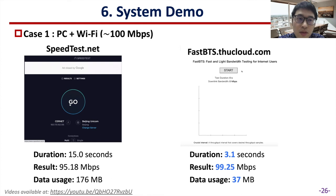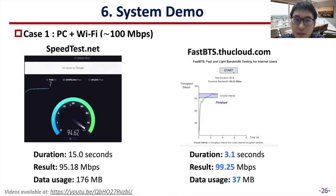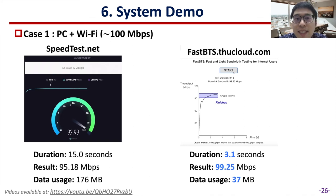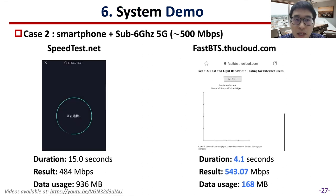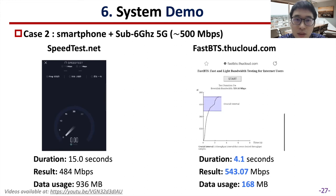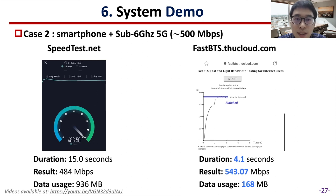Here comes the system demo part. We first conduct bandwidth tests on a personal computer using Speedtest and Fast with a 100 megabytes per second wireless network. FastBTS only uses 3.1 seconds and 37 megabytes of data to obtain an accurate result, while Speedtest uses 15 seconds and 176 megabytes of data for the test. We next conduct a bandwidth test under 5G network. Again, FastBTS outperforms Speedtest by using only 4.1 seconds test duration and 168 megabytes data, while Speedtest uses 15 seconds and about 1 gigabyte data for a single bandwidth test.